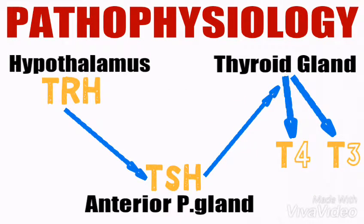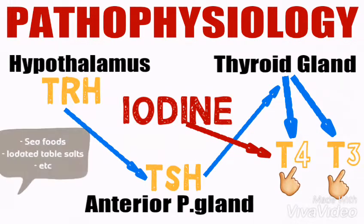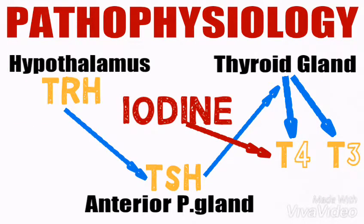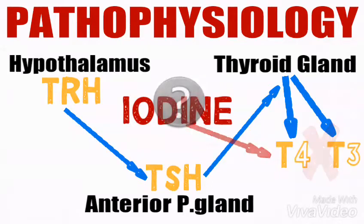Apart from that, you also need to understand that for T3 and T4 to perform their functions fully, iodine is needed. This iodine is obtained from foods like seafoods, iodated table salts, and so on. The thyroid gland takes up iodine from the blood — which is known as iodine trapping — as the blood passes through the thyroid gland. In simple terms, without iodine, T3 and T4 will not be produced.